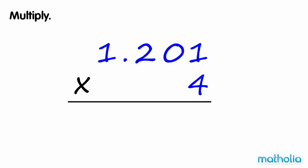Multiply. Find 1.201 times 4. Multiply the thousandths. 4 times 1 thousandth equals 4 thousandths.